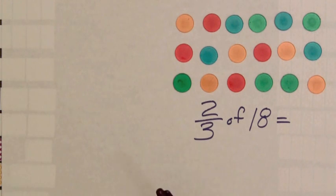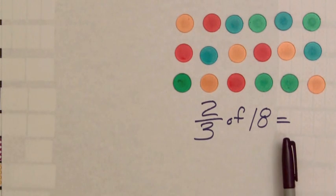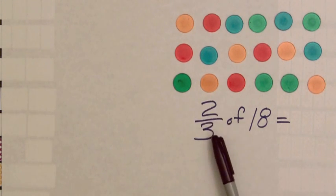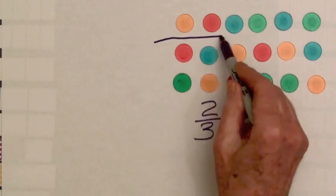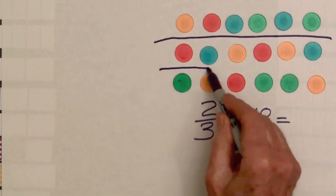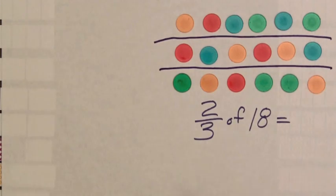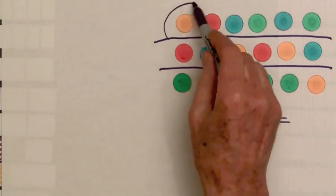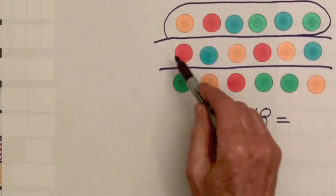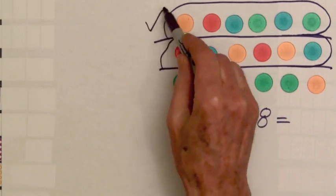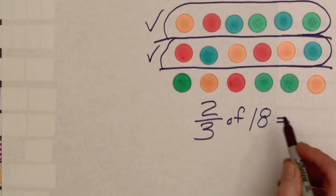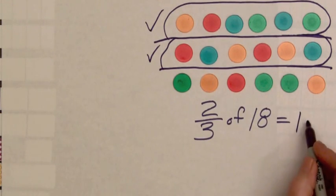For example, two-thirds of a committee of eighteen members attended a meeting. In the fraction two-thirds, the denominator three tells us that we want to divide this set into three equal parts, and the two tells us we're going to take two of those parts. We've got one part here, we've got one part here, so we've got two of those parts, and so two-thirds of eighteen is six plus six, twelve.